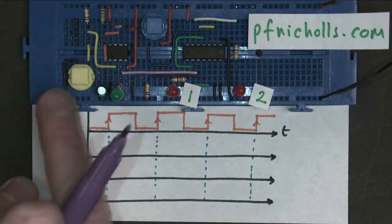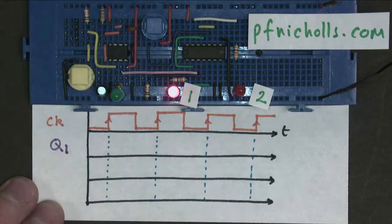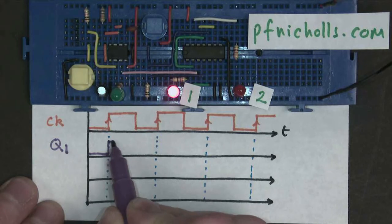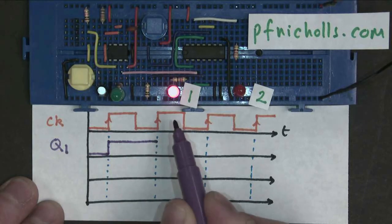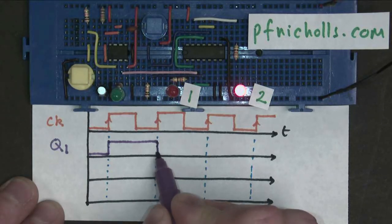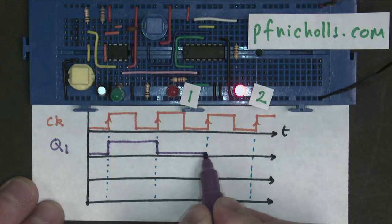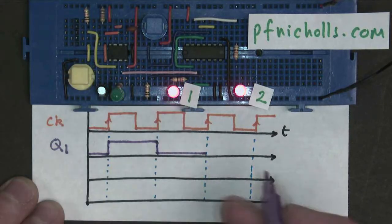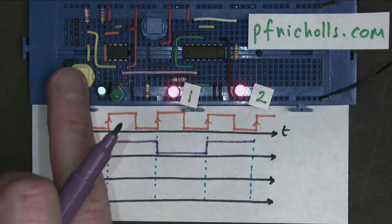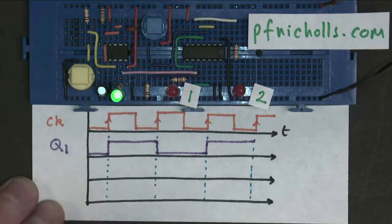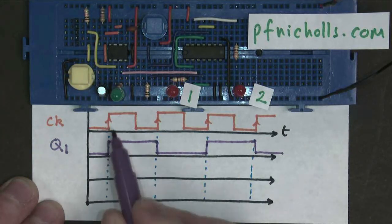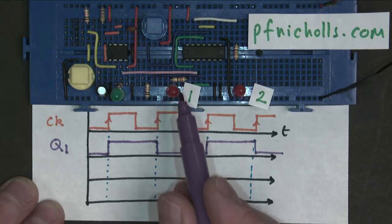So on the first rising edge, Q1 was originally zero. It now goes up and becomes logic one, and it stays there until the next rising edge. On the next rising edge, Q1 goes off, and it stays off until the next rising edge when it comes back on again. And when I press the button again to get the final rising edge, it goes off again. So you can see that Q1 is half the frequency of the clock. This is a frequency divider circuit.